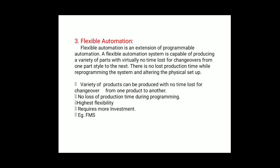The third type is flexible automation. In this system, a variety of products can be produced with no time lost for changeovers from one product to the next. It has the capability to change the part program with no loss of production time. Advances in computer system technology are largely responsible for this programming capability. Flexible automation has higher flexibility compared to other automation types but requires a high investment cost. Flexible Manufacturing System (FMS) is a good example.